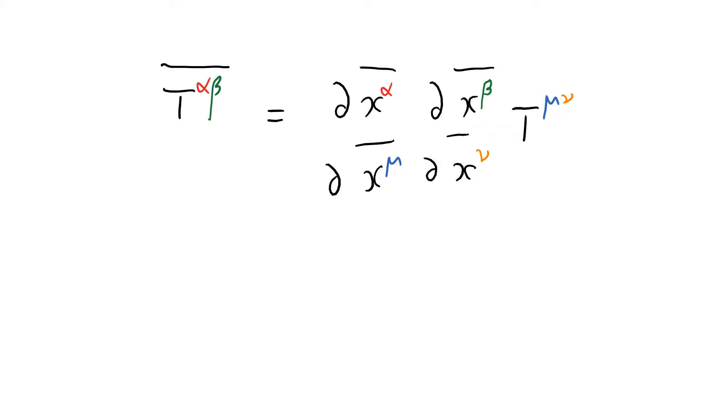What I've got here is the tensor transformation law for a stress energy tensor, written in this rather fetching colored notation. We've got alphas written in red, betas in green, and the two dummy indices which are summed over, mu and nu, written in blue and orange here.